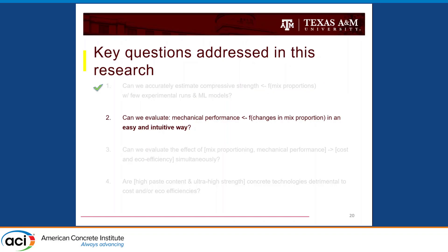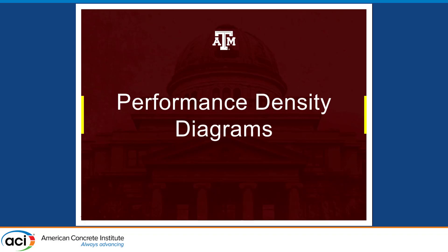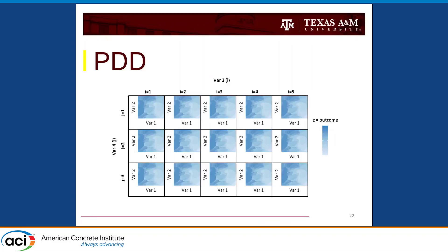Performance density diagrams help us look inside our models in an easy and intuitive way. These diagrams resemble a matrix of contour plots where the main variables are on the x and y axes, other variables are organized by boxes, and the outcome is shown as the density of the diagram. This lets you look inside your prediction model and see if the trends make sense — it's almost like a portrait of your material.